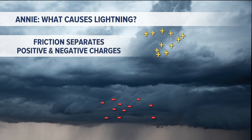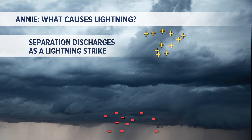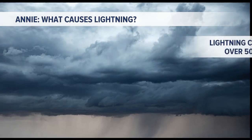There's also some ice crystals, and so as the air is moving around and it's bumping into everything, that's actually separating positive charges and negative charges. It's just like if you rub a balloon on your hair, and then all of a sudden your hair starts to stick up because that friction on the balloon in your hair is separating positive and negative charges.